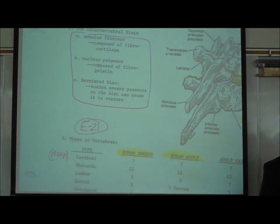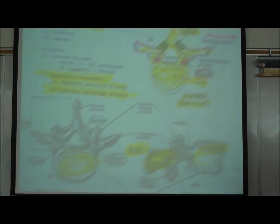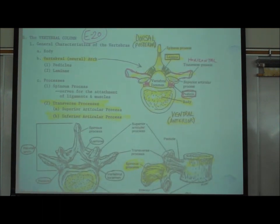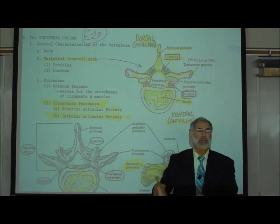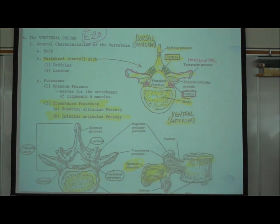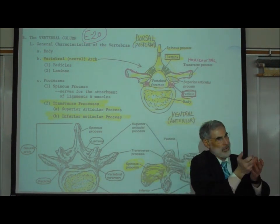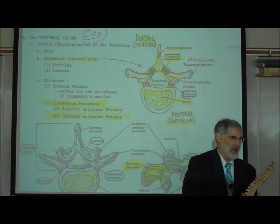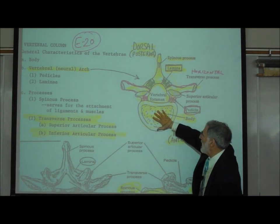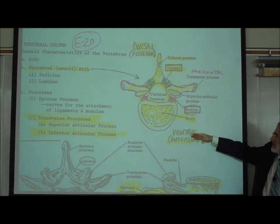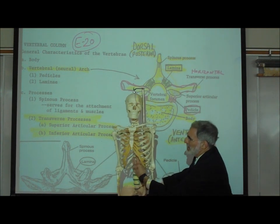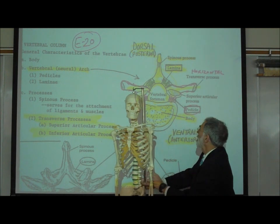Going back to E20, the basic structure of a vertebra is as follows. The body of the vertebra faces the ventral or anterior — the front side. On the back, sticking out posteriorly, is the spinous process. We can all feel these spines by running our hand along our backside — those are the spinous processes of the vertebrae, on the dorsal or posterior side.